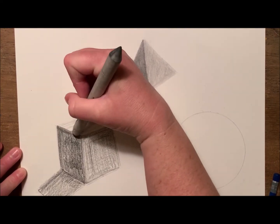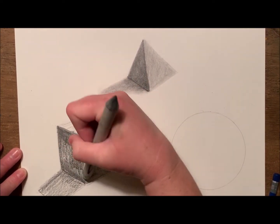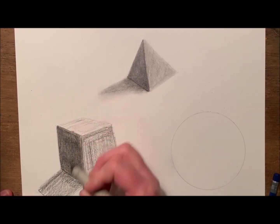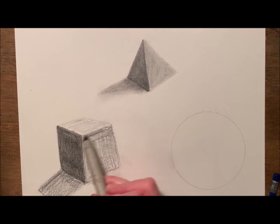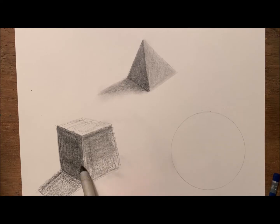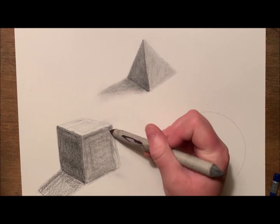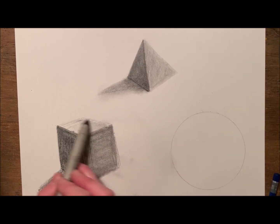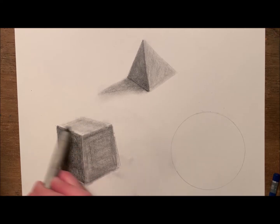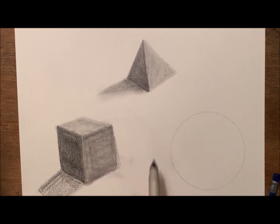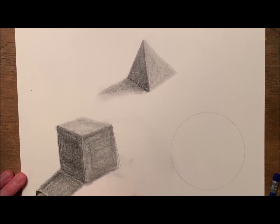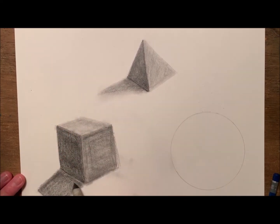Again, using a blending stump or your finger, you want to go in and very firmly blend the darkest values. And again, using less pressure for your lighter values, make sure you evenly blend all of your shades. Remember that your shadow is not a solid figure, so the edges should be softened and almost blurry.